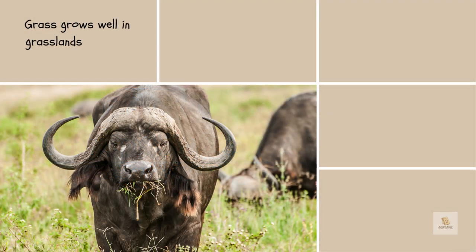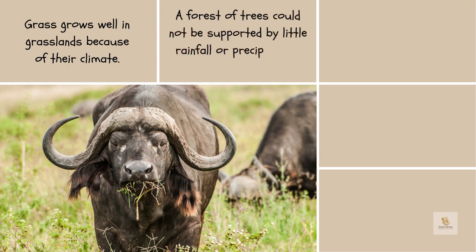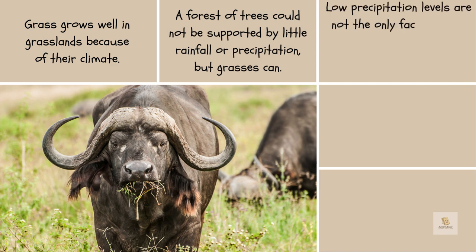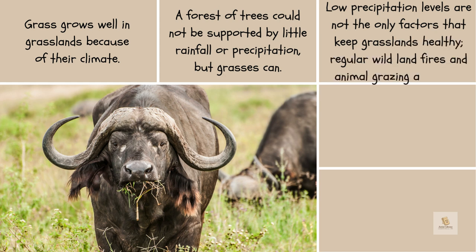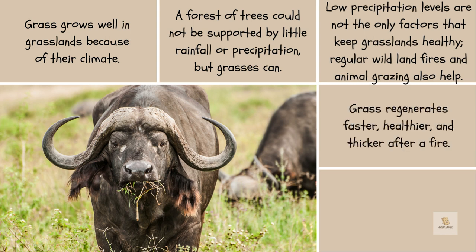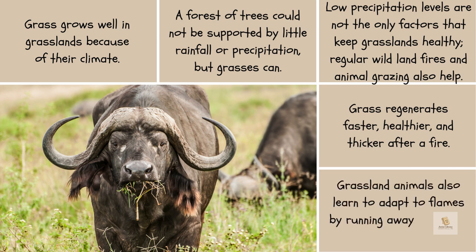Grass grows well in grasslands because of their climate. A forest of trees could not be supported by little rainfall or precipitation, but grasses can. Low precipitation levels are not the only factors that keep grasslands healthy; regular wildland fires and animal grazing also help. Grass regenerates faster, healthier, and thicker after a fire. Grassland animals also learn to adapt to flames by running away or digging underground.